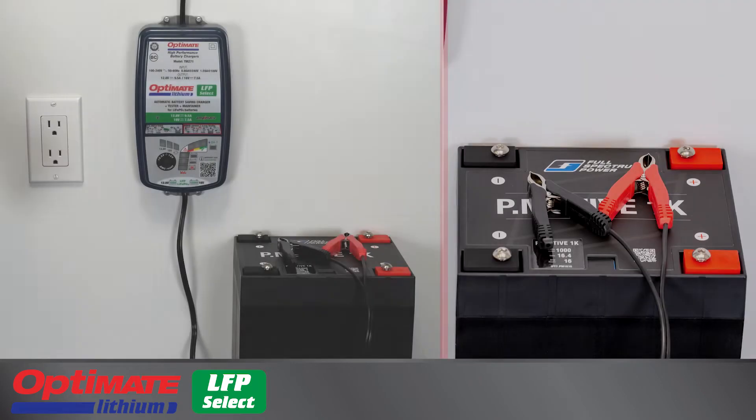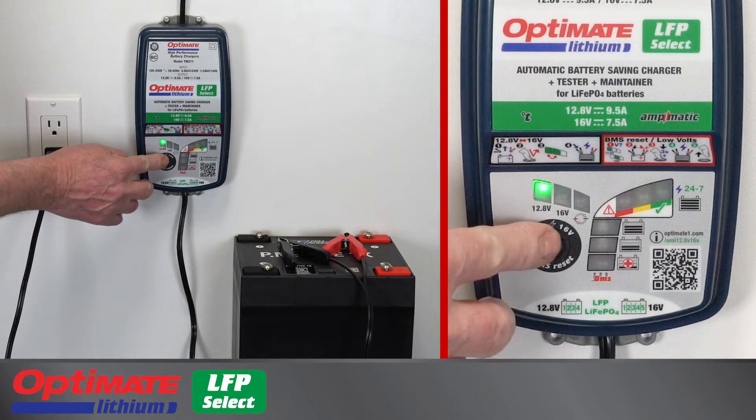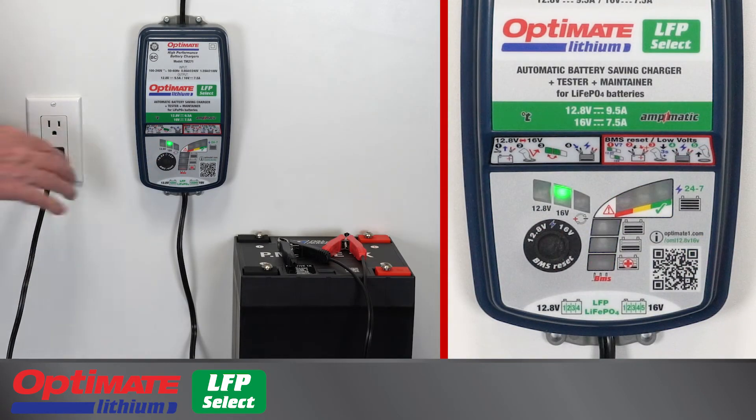To select the alternate charge voltage with battery disconnected, press and release the button. The newly selected voltage remains in memory even if AC power is disconnected.